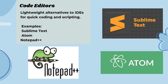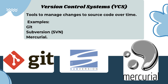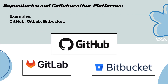Notepad++. Version Control Systems, or VCS, are tools to manage changes to source code over time. Examples include Git, Subversion (SVN), and Mercurial. Repositories and collaboration platforms include GitHub, GitLab, and Bitbucket.